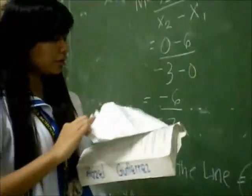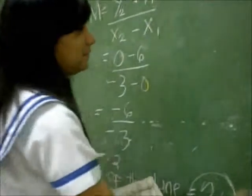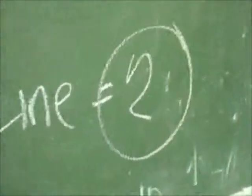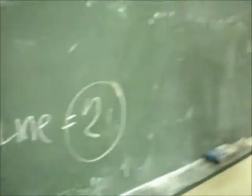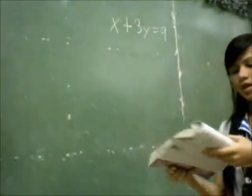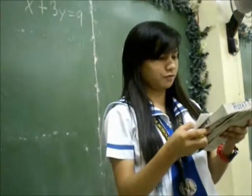We will move to another example. Find the slope and y-intercept of the line defined by x plus 3y equals 9. Write the equation in slope-intercept form. So we have to solve for y.